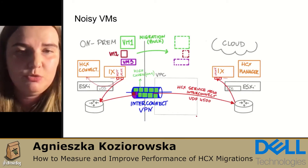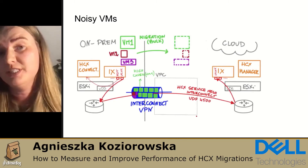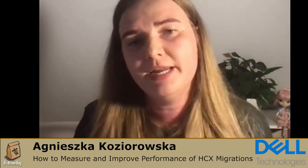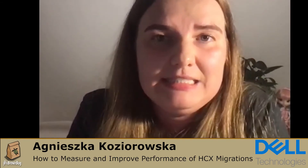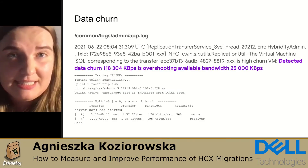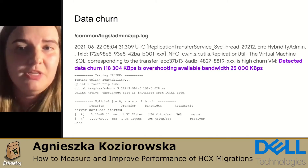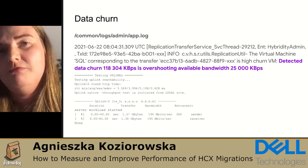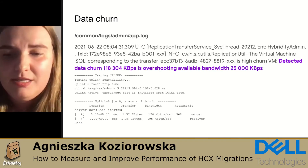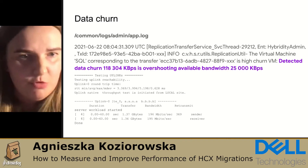Step four is to identify busy VMs. When migrating in bulk waves, some VMs — even after initial synchronization — are still replicating while waiting for the cutover window. In that moment, a high-churn VM can affect other migrations. What I like about HCX is that it will notify you: there will be an alert on the HCX dashboard indicating this VM is producing more data than the pipe can handle and should be migrated alone. If you look into the appliance logs, you'll see the text 'data churn is overshooting the available vMotion bandwidth.'